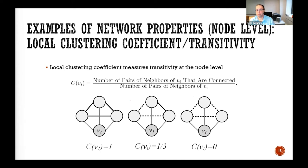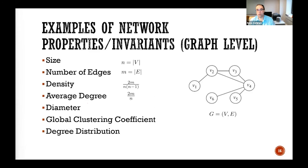Some non-centrality measures: you can use the local clustering coefficient, which represents a node using a measure that captures how well connected its neighbors are. On the left, the clustering coefficient is one because all three neighbors of node V1 are connected. On the right, it is zero because all neighbors are disconnected.